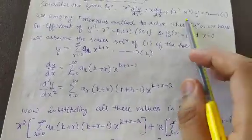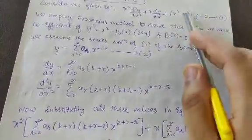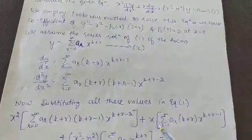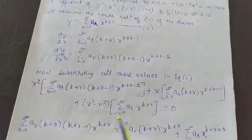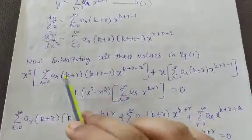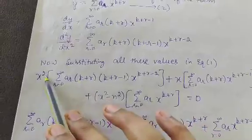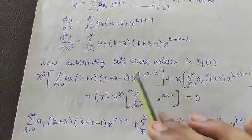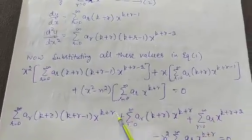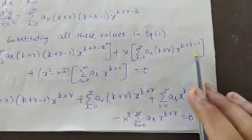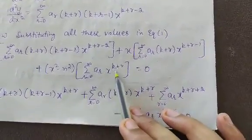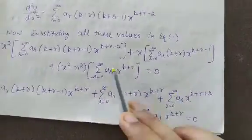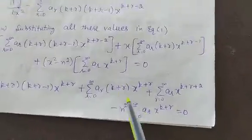Now substituting all these values into equation 1: x² times y'' plus x times y' plus (x² − n²) times y = 0. Multiplying through: x² · x^(k+r−2) gives x^(k+r); x · x^(k+r−1) gives x^(k+r); and x² · x^(k+r) gives x^(k+r+2).